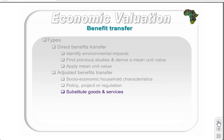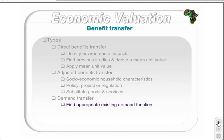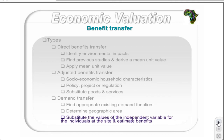The adjusted benefits transfer is done to prevent the transference of inaccuracies or biases from the initial study site. The third and most sophisticated method is the demand transfer, which uses an entire demand function from the initial study to the current study. The steps are: first, find a study that has estimated an appropriate existing demand function; second, determine the geographic area over which households will benefit from the change in environmental quality; third, substitute the values of the independent variables for individuals at the site into the willingness to pay equation at the initial site and estimate benefits at the project site; finally, aggregate the individual estimates to determine the total benefits for the study.